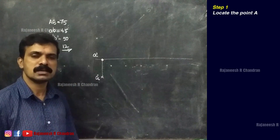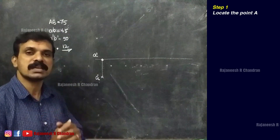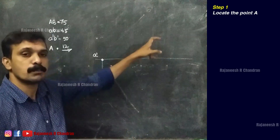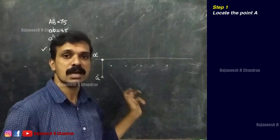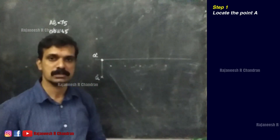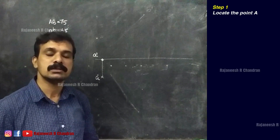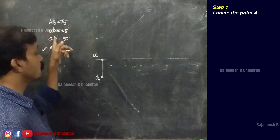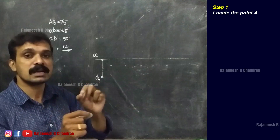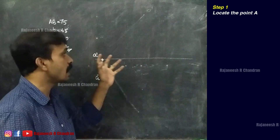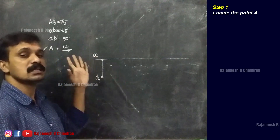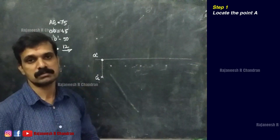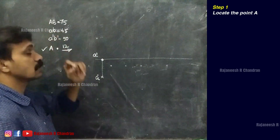Now the true length is given. Can we utilize true length? The true length can be utilized only if the other endpoint is given, so that with the help of the other endpoint we can draw the locus line and on that locus line we can intersect the true length. Or the true length can be used when the true inclination is also given. So if theta or phi was given, that true length can be clubbed with that true inclination. Here only the true length is given — no locus line, no theta or phi — which means true length cannot be used right now.